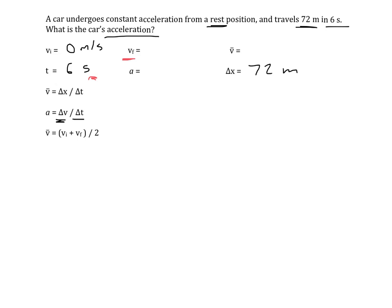Well, what can we do with this information about 72 meters in 6 seconds? That is the total distance traveled and the total amount of time. So if we divide those two, 72 divided by 6 gives us 12, that means the average speed is 12 meters per second over that entire time.